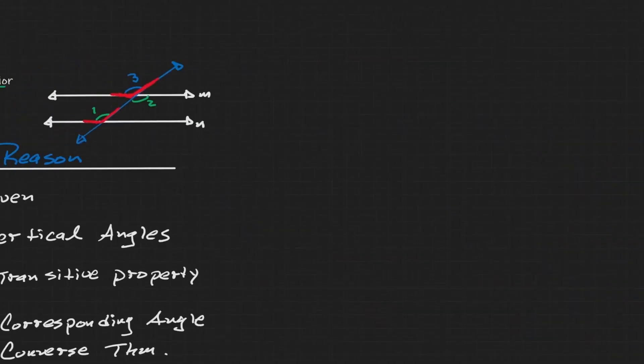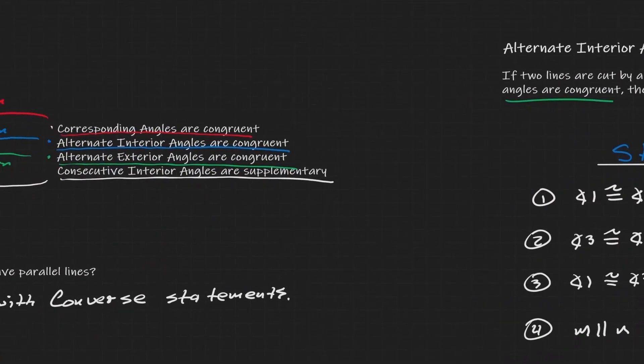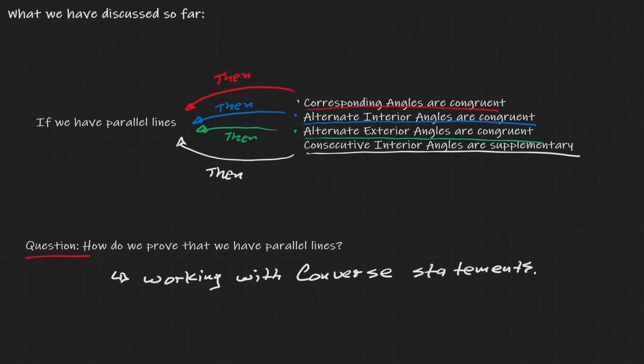To recap: everything boils down to this — if we can show that corresponding angles are congruent, then we have parallel lines. If we can show that alternate interior angles are congruent, then we have parallel lines. If we can show that alternate exterior angles are congruent, then we have parallel lines. If we can show that consecutive interior angles are supplementary, then we have parallel lines. To prove parallel lines, you must fulfill one of these four statements.